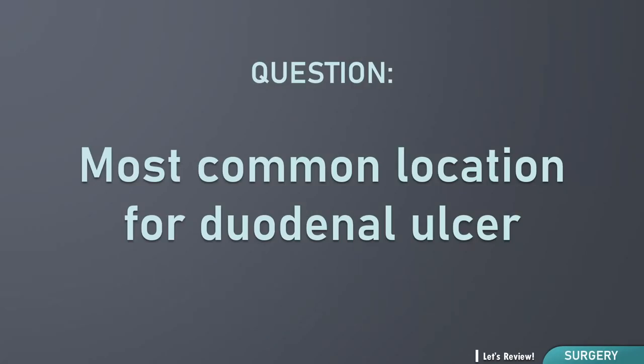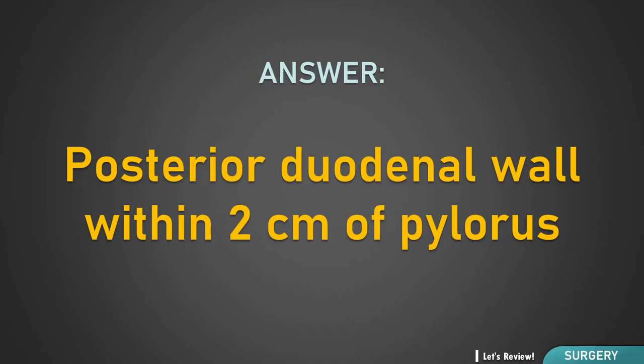Most Common Location for Duodenal Ulcer: Posterior Duodenal Wall Within 2cm of Pylorus.